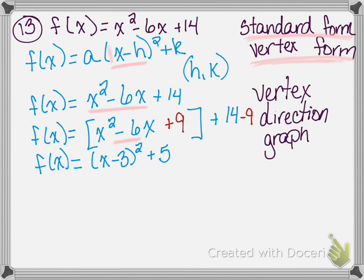Because of this, we are able to say our vertex is (3, 5). The direction is up — there is no negative in front; the coefficient is 1, which is positive, so it opens up. Our direction of the parabola is going up. Now we are going to do a very rough sketch of this just to get an idea of what our parabola looks like.